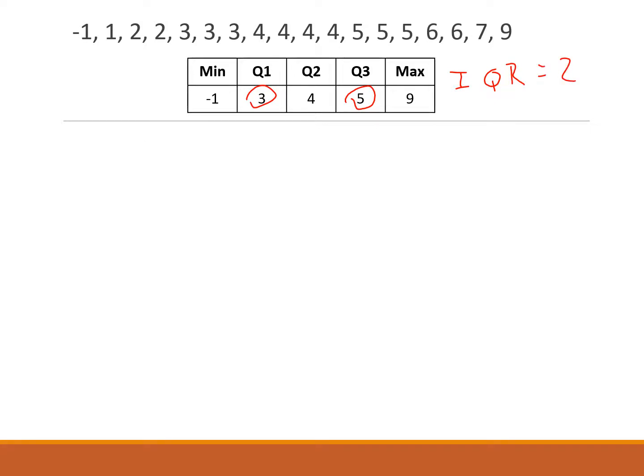Now we want to use this to find the upper and lower fence. Lower fence first: it's Q1 minus one and a half times the IQR. So Q1 is 3, one and a half times that IQR of 2 is 0. Anything below this number is an outlier. So if we look at our data set, that negative 1 would be an outlier.